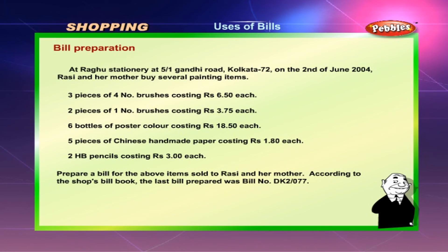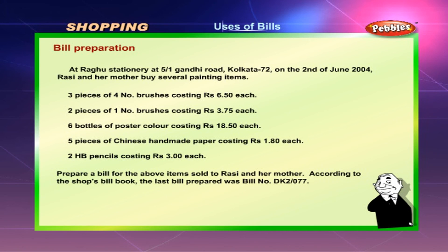Prepare a bill for the above items sold to Rousey and her mother. According to the shop's bill book, the last bill prepared was bill number DK2/077.